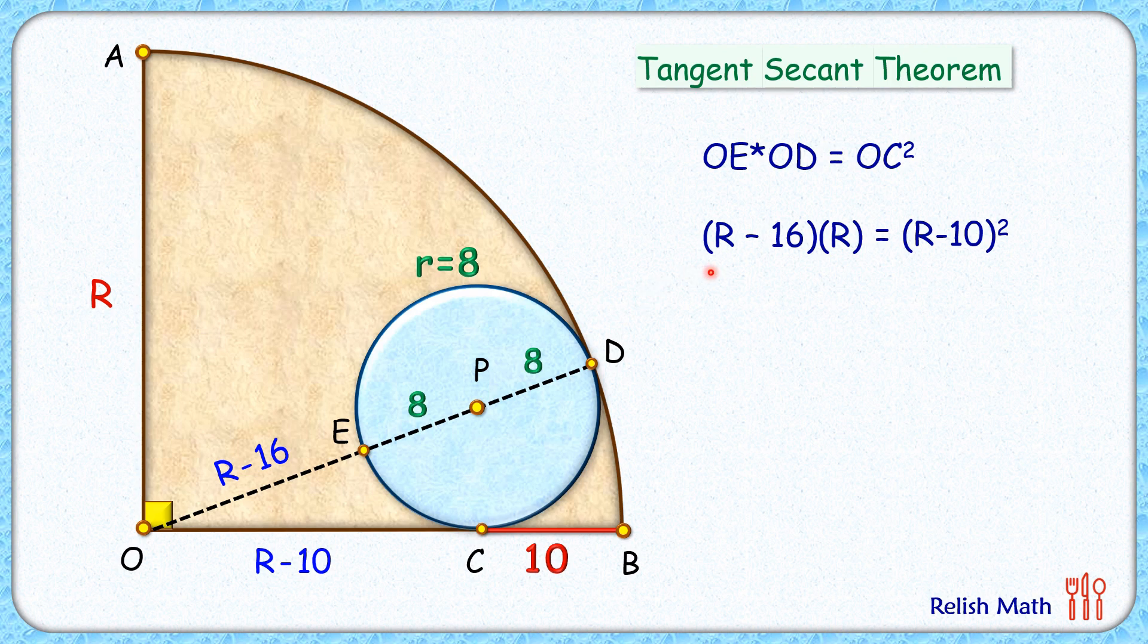Now opening the bracket: LHS will be R squared minus 16R. RHS, applying the formula for (a minus b) whole squared and solving it—both sides R squared will get cancelled. Simplifying, we get 4R equals 100, or R equals 25 centimeters.